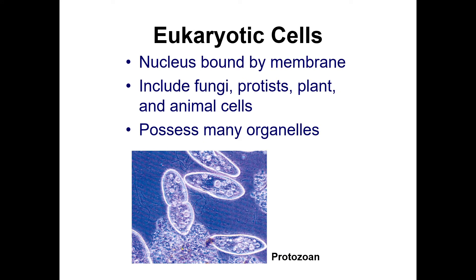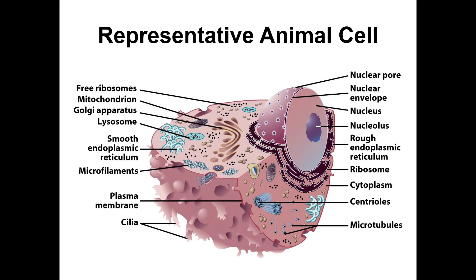Eukaryotic cells, however, have a nucleus, meaning all of their DNA and genetic information are kept in one single place. These include fungi, protists, plants, and animal cells. They possess many organelles, which are mostly membrane-bound.